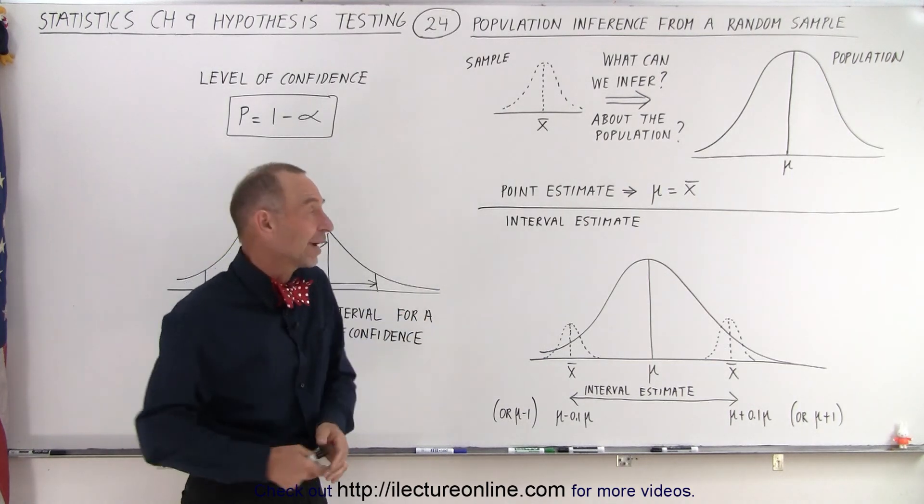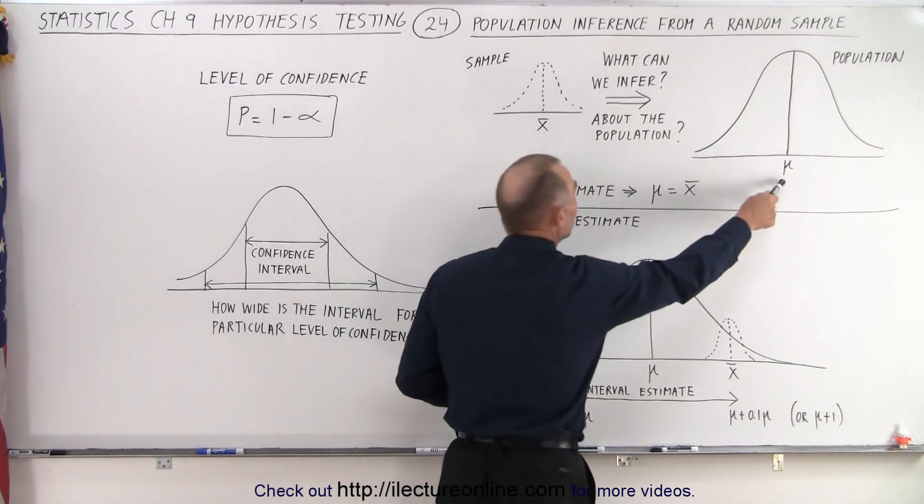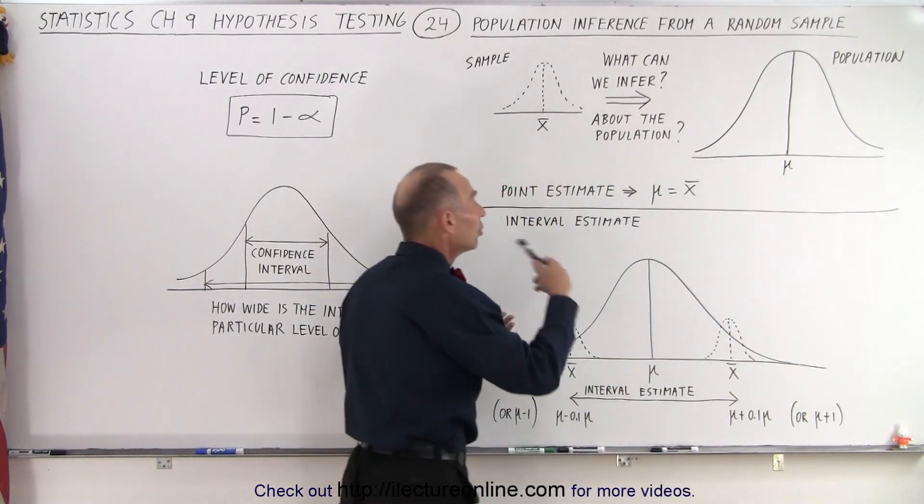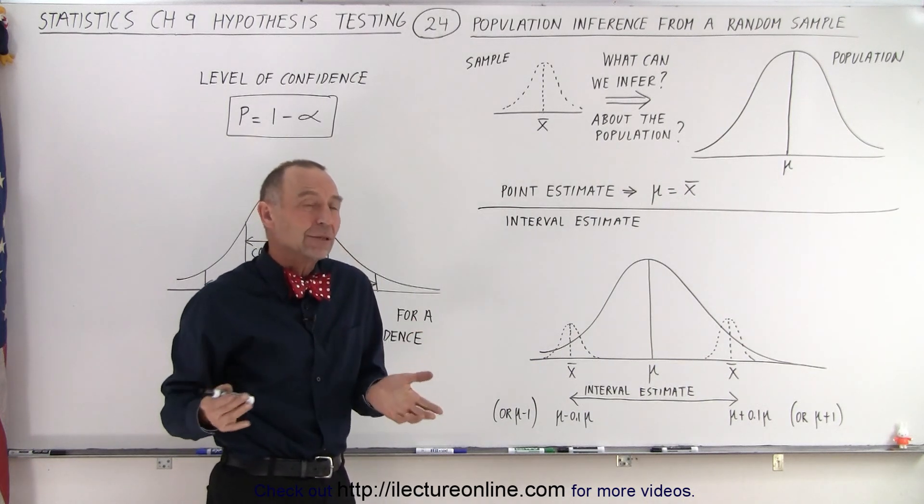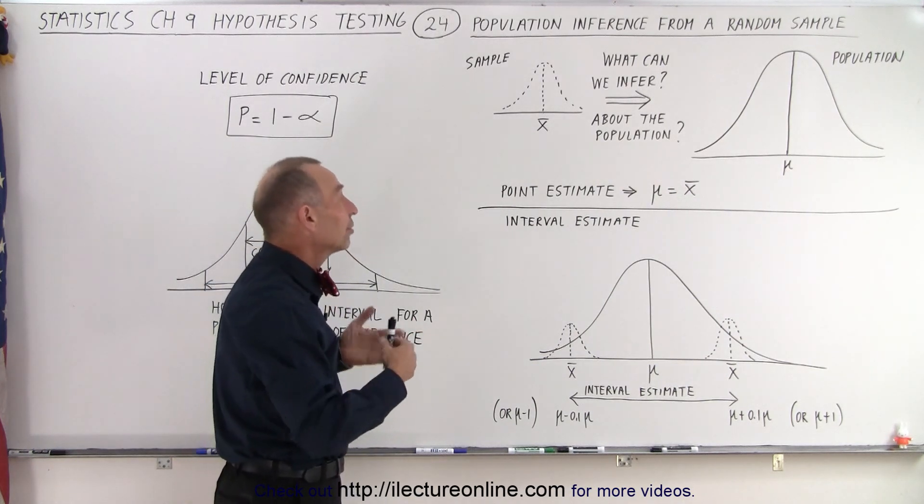At least it gives us some sort of idea about the population mean by saying let's just call it equal to the sample mean. A better thing probably to do is to take what we call an interval estimate.